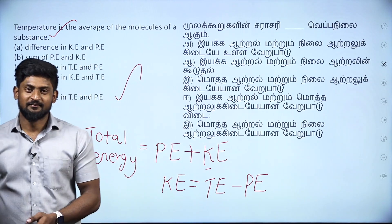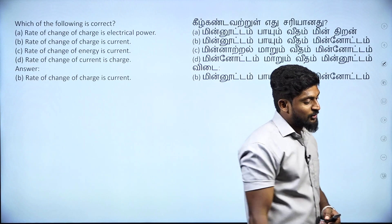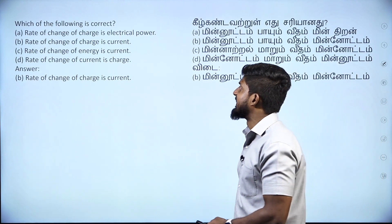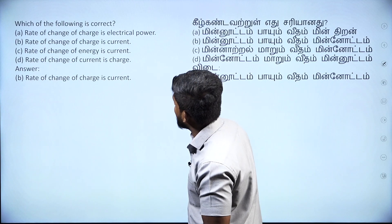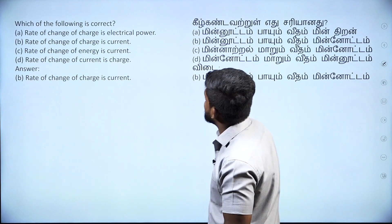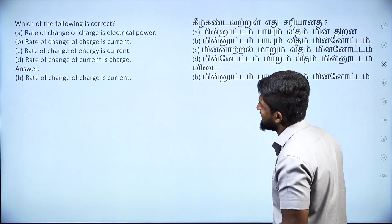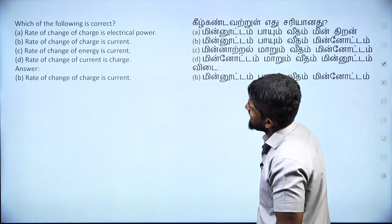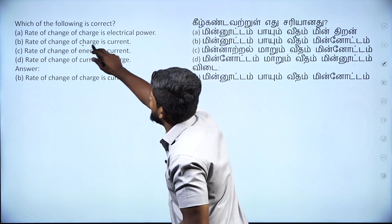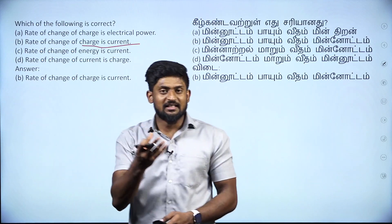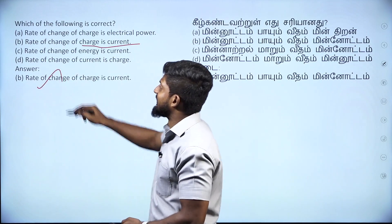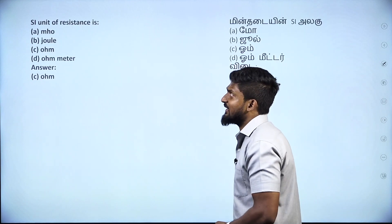Next one: which of the following is correct? Rate of change of charge is electrical... rate of change of charge is current... rate of change of energy is current... So option D is the correct answer: rate of change of charge is current.